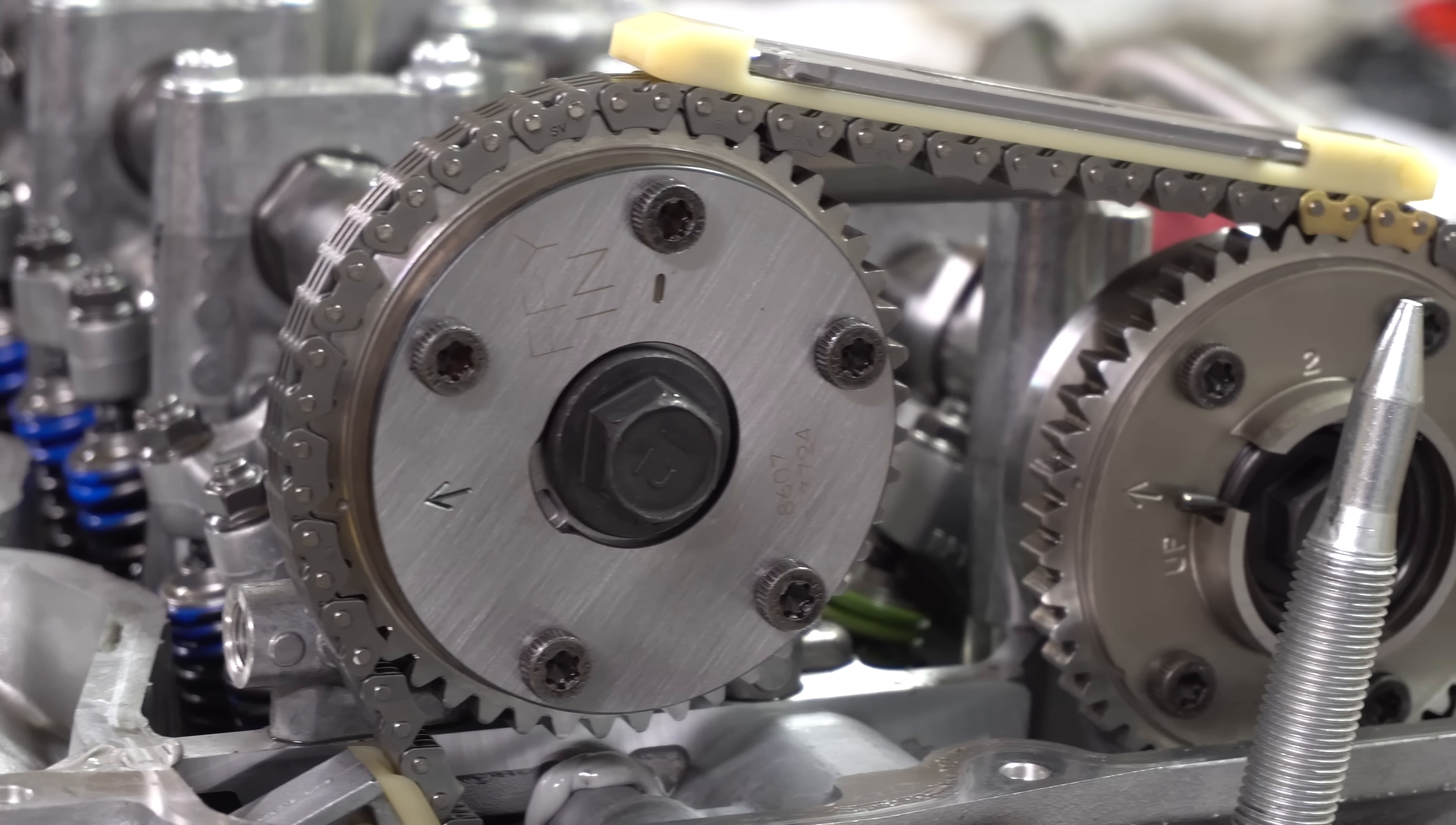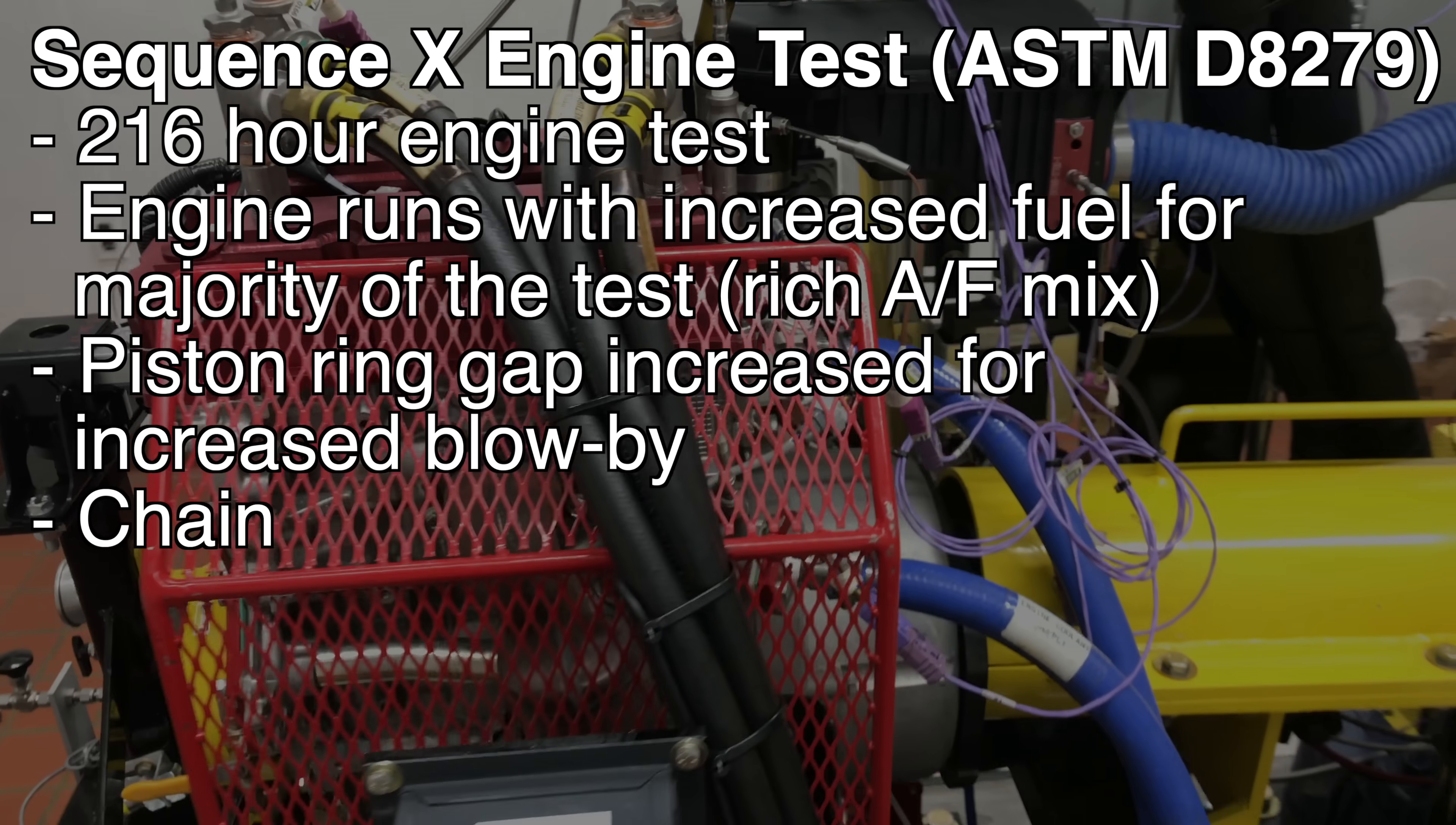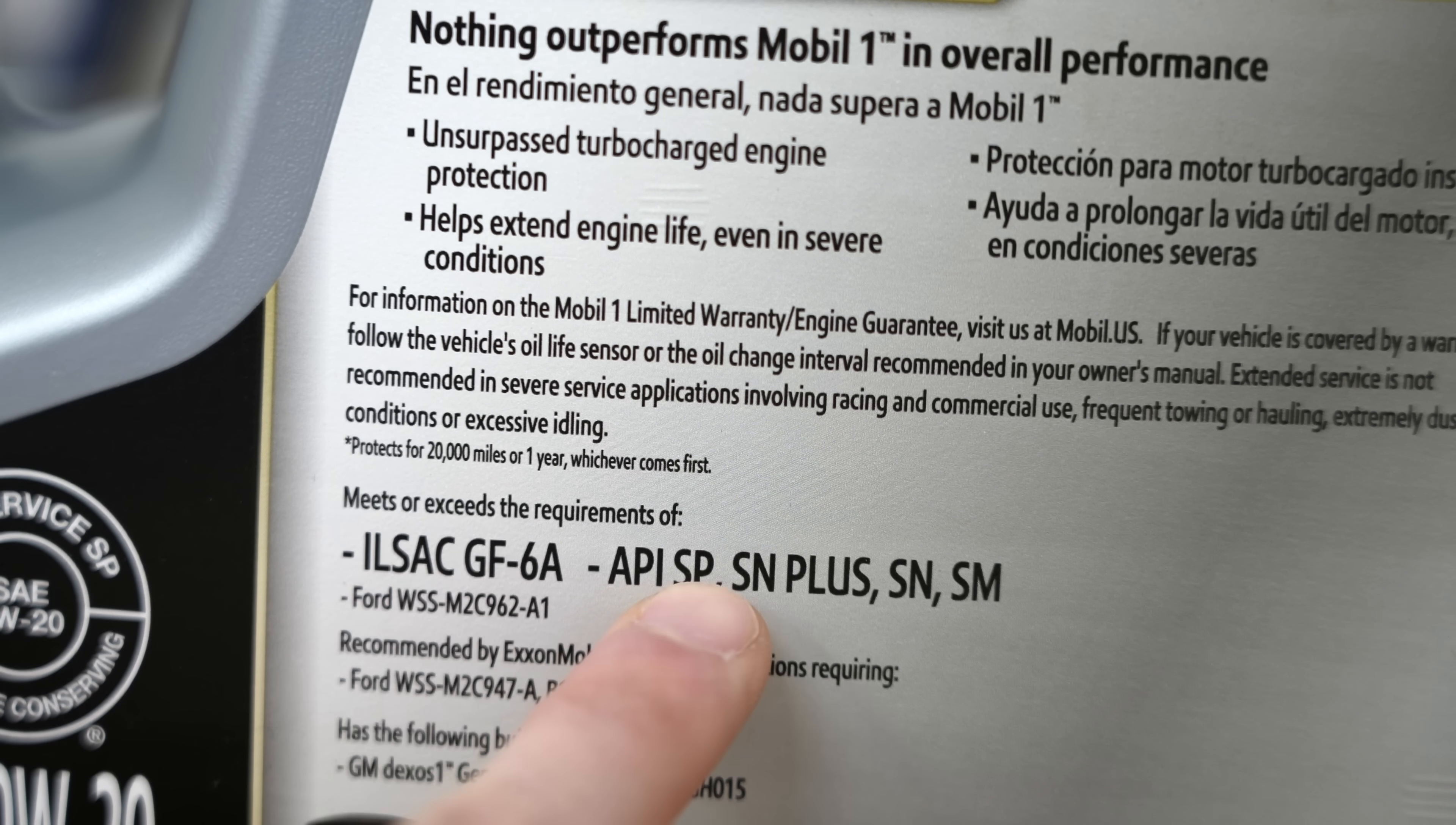There's a test called the sequence 10 engine test, which is an ASTM standardized test. In this test, you run an engine for many hours. And for the majority of the test, the engine is injecting excess fuel, thus running rich and creating a lot of soot. The piston ring gap is also increased so you have excess blow-by, thus putting a lot of soot into the oil. And you measure the timing chain length after engine break-in and then after the test is completed, and the chain can't have elongation greater than a small fraction of a percentage. So how do you know if the oil you're using passed this test? Well, you have to look at the back of the bottle for the certifications. Anything with API SP or ILSAC GF6 will have passed this test.